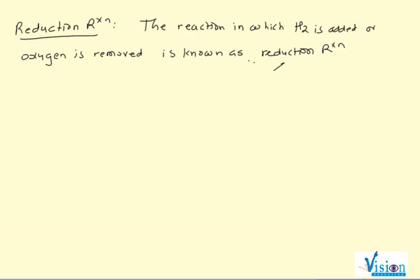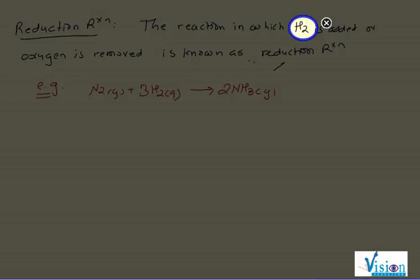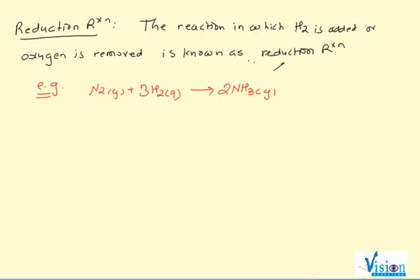For an example, nitrogen gas plus 3H2 gas gives you 2NH3 gas. This reaction is added. If you are adding this reaction, or oxygen is removed, then it is known as reduction reaction. And I have given you one example.